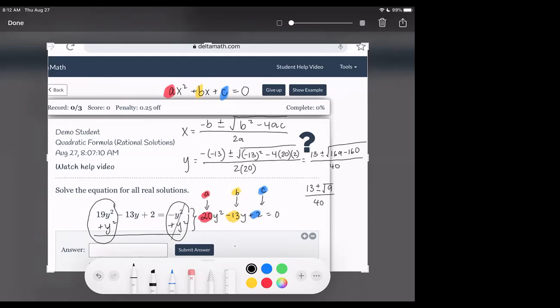Then we have 13 plus or minus the square root of 9, all over 40. Okay, continuing to simplify. This is 13 plus or minus the square root of 9 is simply 3, and this is all over 40.